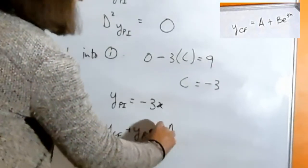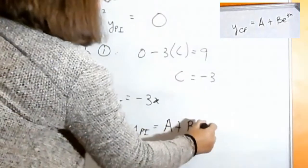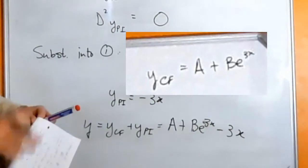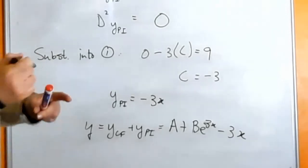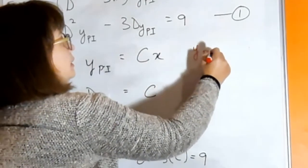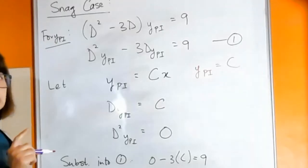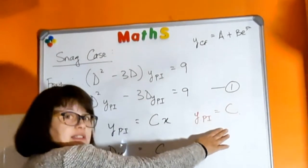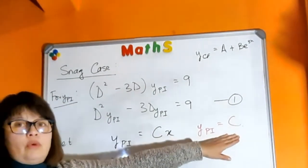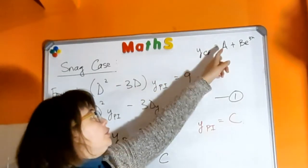Now I just want to take you back a moment to the previous trial function that we tested. You remember we tried the particular integral being a constant value. Now notice the form of this trial function—the form of the trial function is a constant. If you compare this form to the terms in your complementary function, you'll see in your complementary function your first term's form is a constant value, your second term's form is an exponential value.